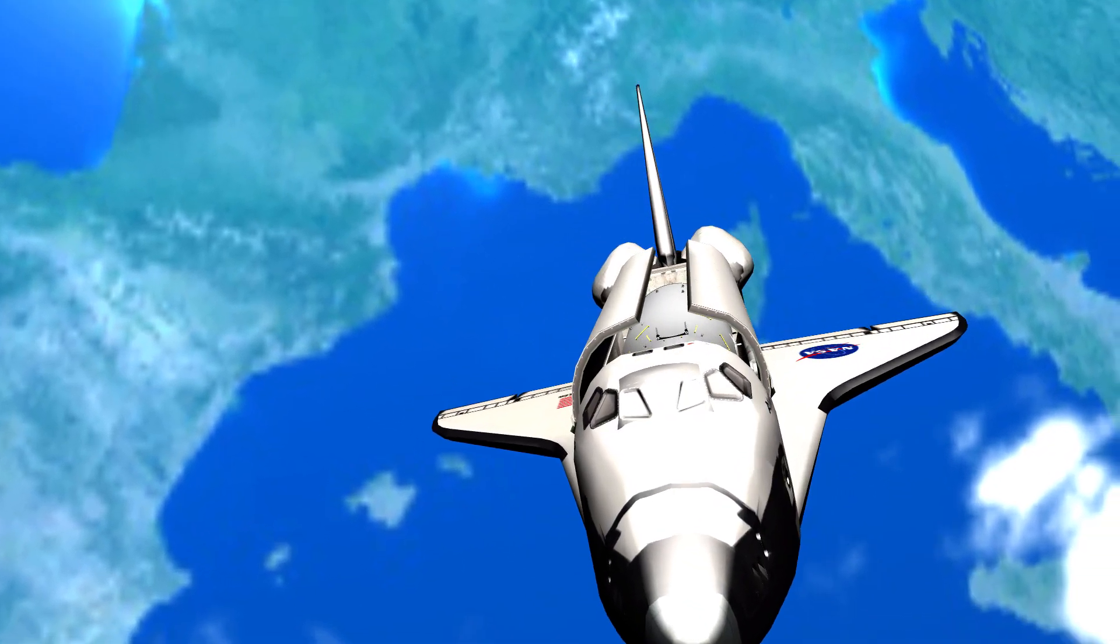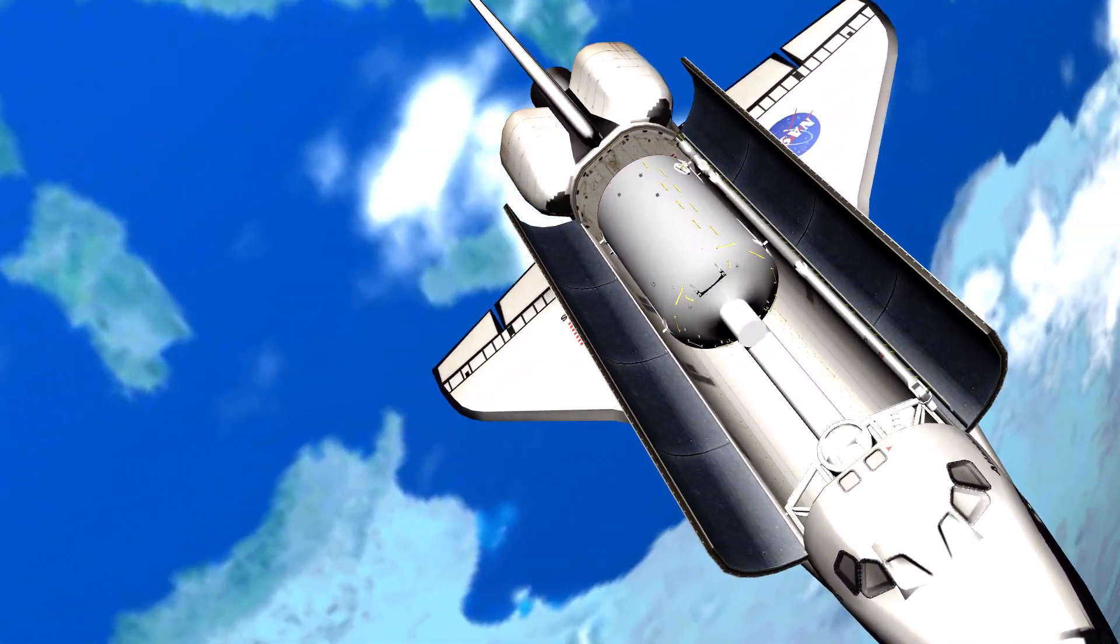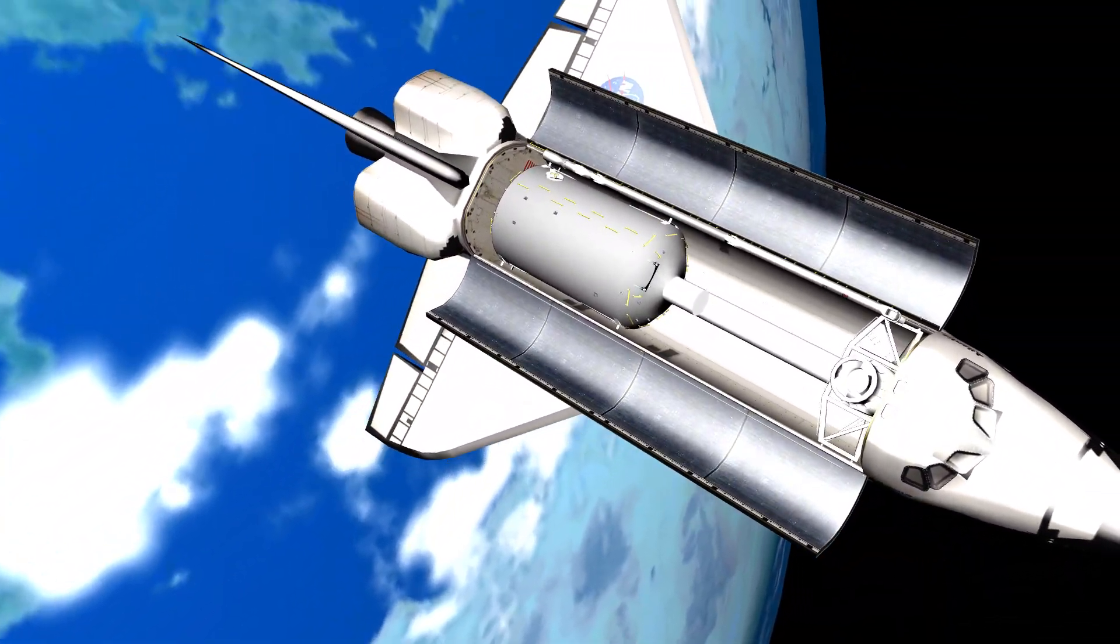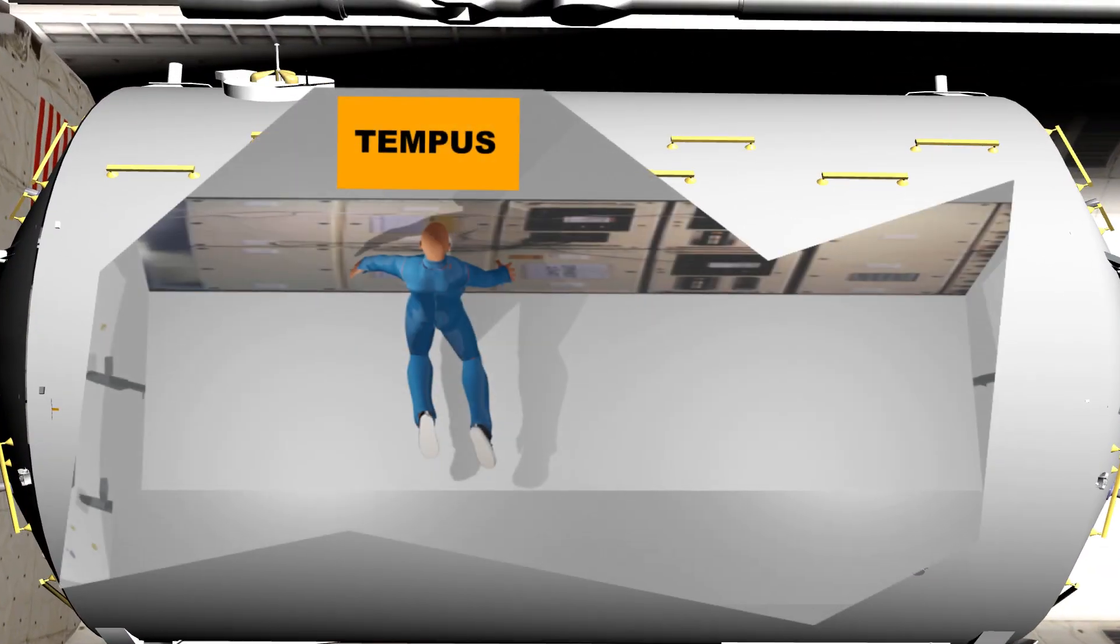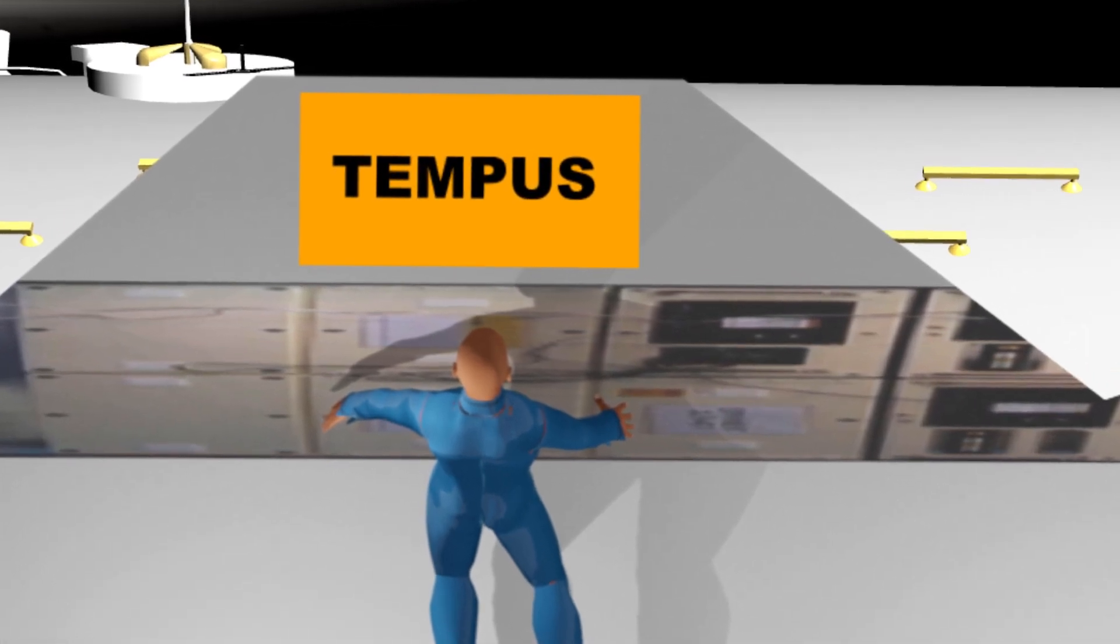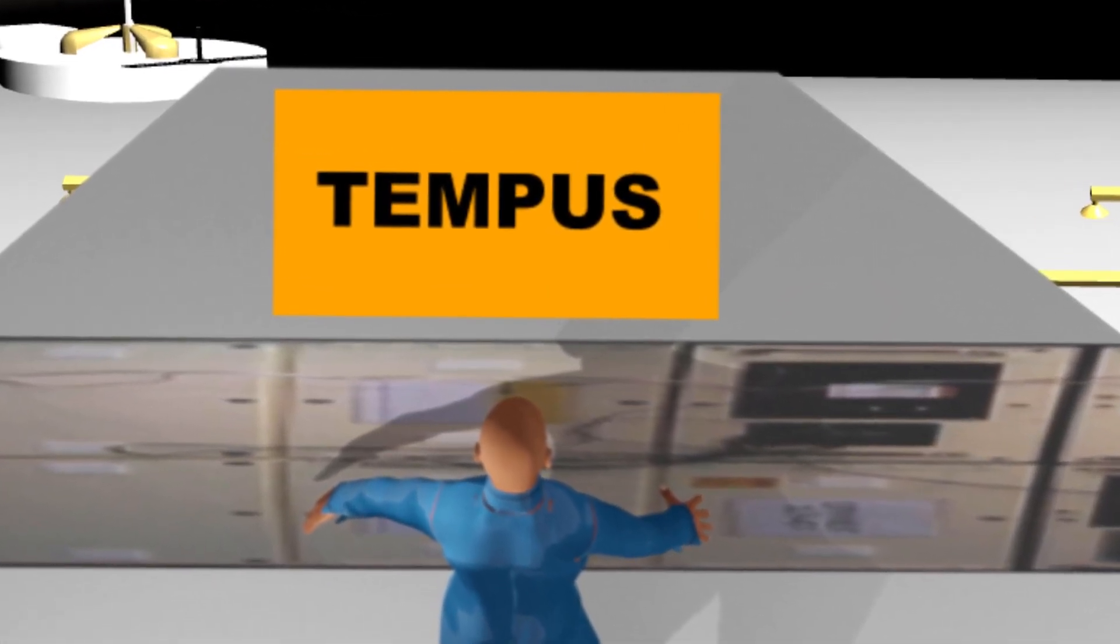Fast forward to 1983. The ESA Space Lab is launched aboard NASA's Space Shuttle. One of the devices on board was the German-built TEMPES, which stands for Tegelfires Electromagnetische Prozessien unter Schwererlosigkeit.